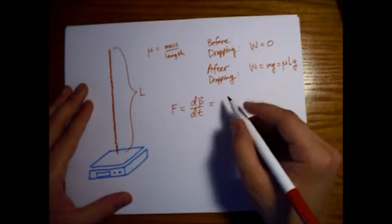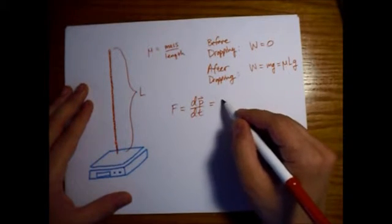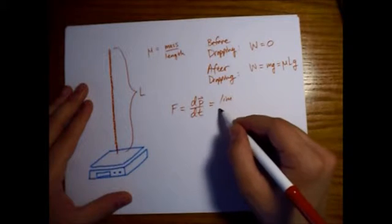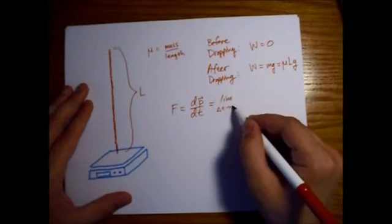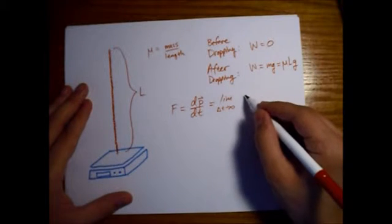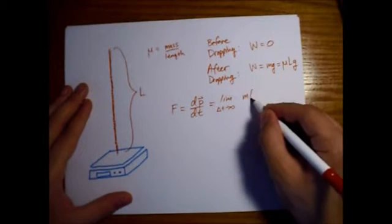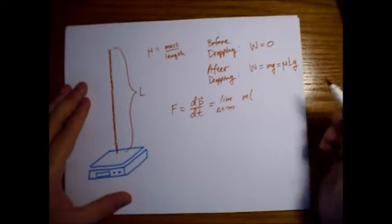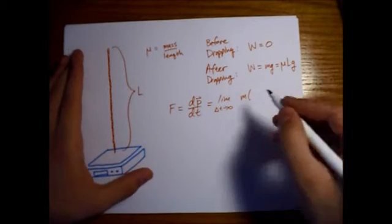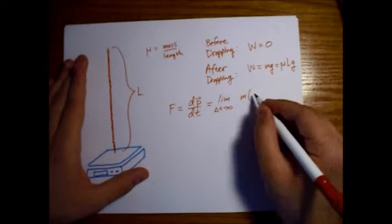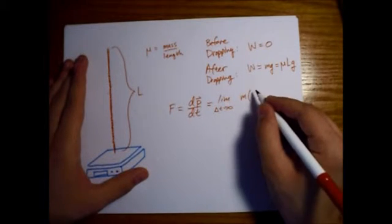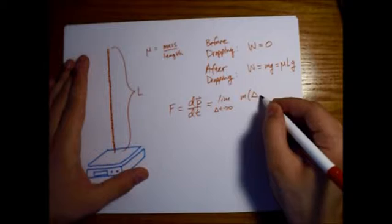And so we can go ahead and go into this a little bit. So we have the force, right? And we will just use the form of Newton's second law where this is a change in momentum with respect to time. So we're looking at how much does momentum change as these links are hitting the scale. So that will be this force in addition to the dead weight of the chain that's already resting on the scale.